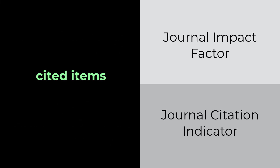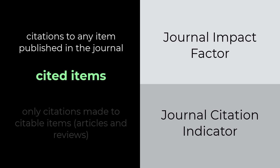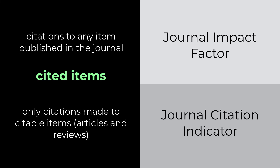The JIF numerator includes all citations made to any item published in the journal in the previous two years, and is not limited to only the citable items. The JCI only counts citations made to the citable items. Any citations to non-citable items — for example, letters, news, or editorials — are not included.